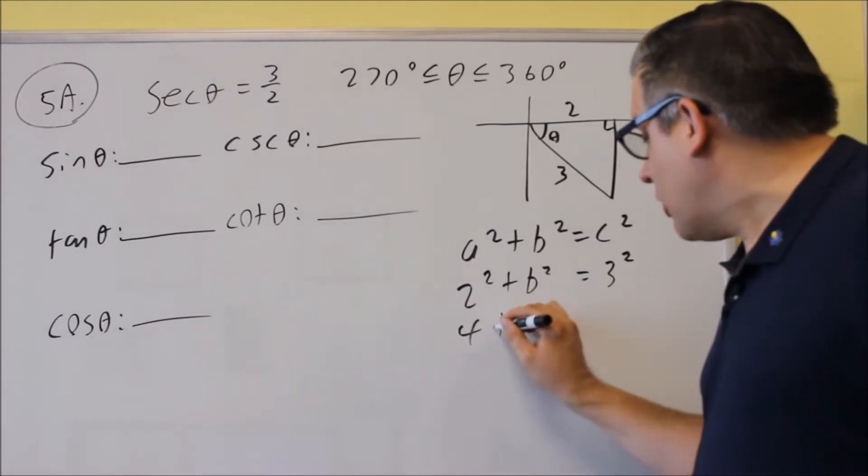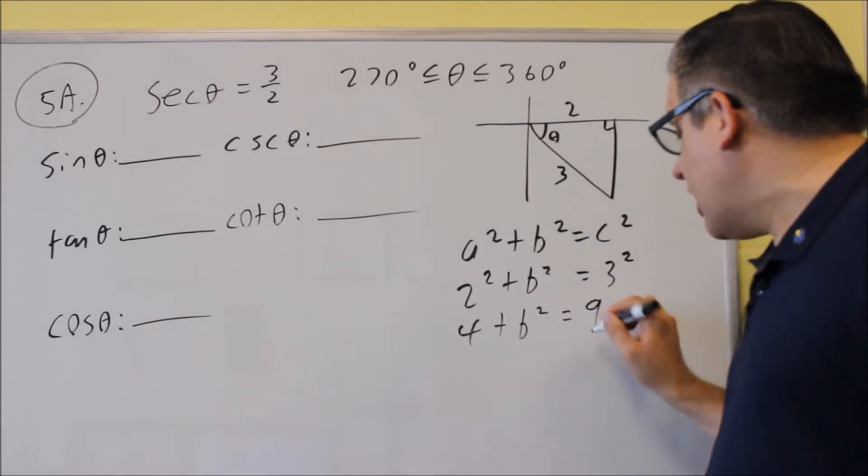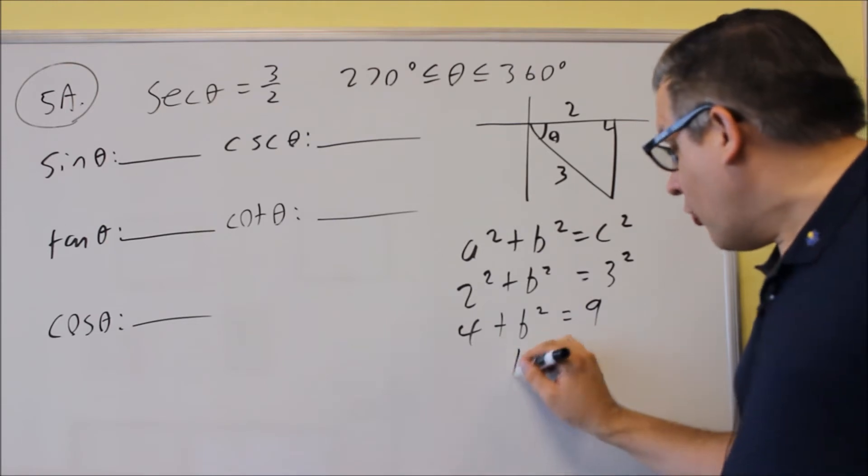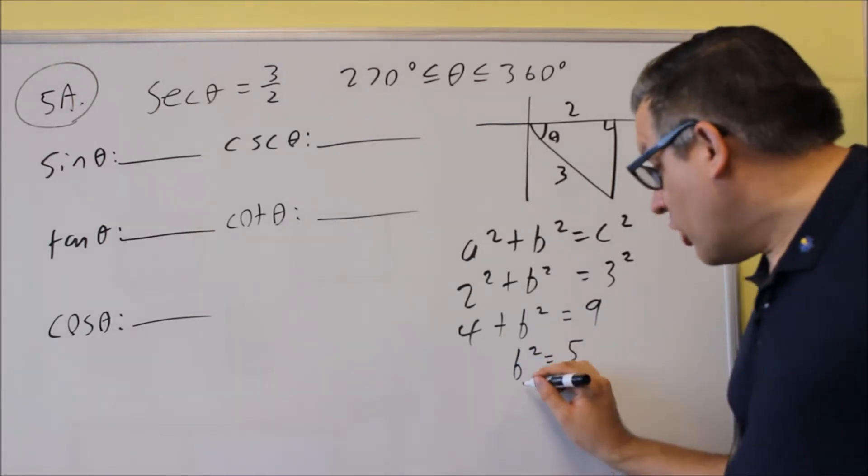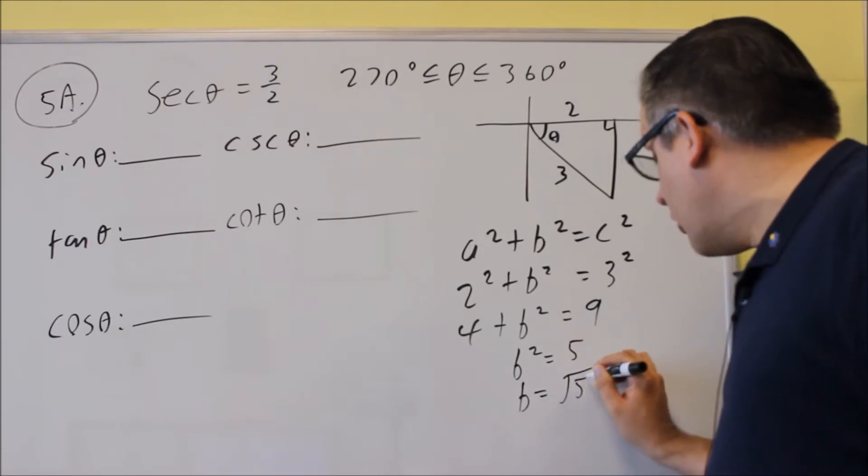So this will be four plus b squared equals nine. We'll subtract the four, and we get five. We square root that, and we get square root of five.